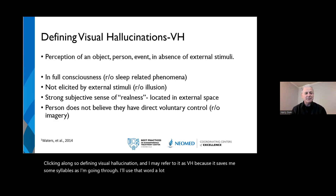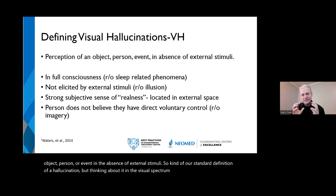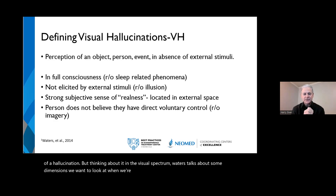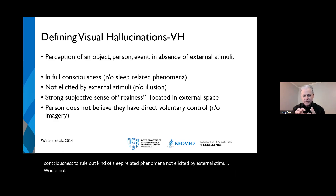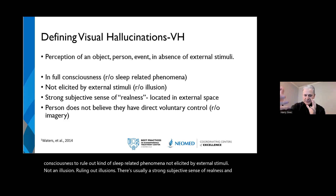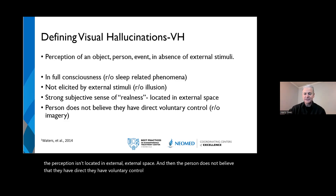VH is the perception of an object, person, or event in the absence of external stimuli — our standard definition of a hallucination, but in the visual spectrum. Waters talks about dimensions to evaluate: the experience should be in full consciousness to rule out sleep-related phenomena, not elicited by external stimuli, so not an illusion. There's usually a strong subjective sense of realness, the perception is located in external space, and the person does not believe they have voluntary control over the experience.